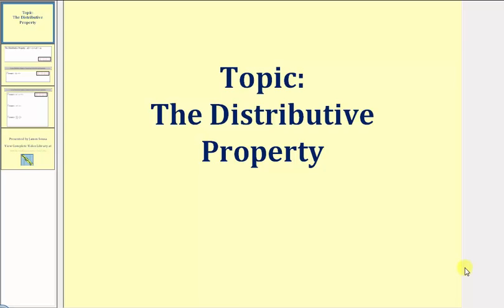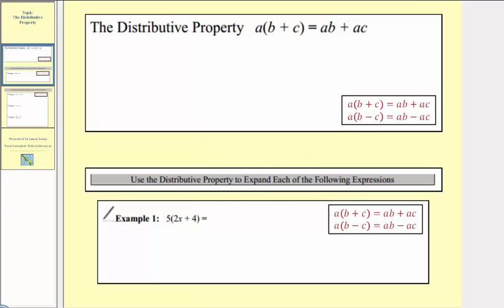Welcome to a lesson on the distributive property. The distributive property is often referred to as multiplication across addition or subtraction. The distributive property is stated here where A times the quantity B plus C equals A times B plus A times C.